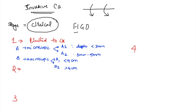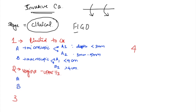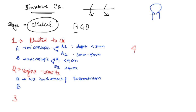Stage 2 means the tumor has spread to the vagina, involving only the upper one-third of the vagina. Stage 2A means no involvement of the parametrium - the tissue surrounding the cervix and uterus. Stage 2B means there is parametrial involvement.